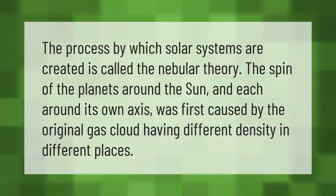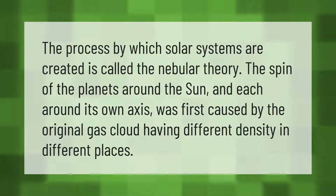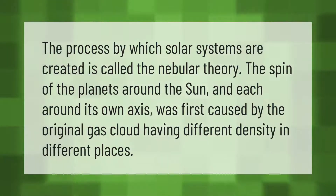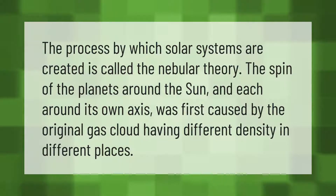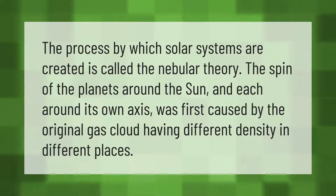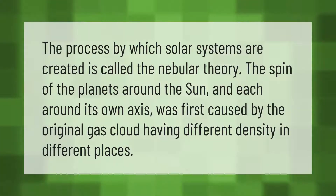The process by which solar systems are created is called the nebular theory. The spin of the planets around the sun and each around its own axis was first caused by the original gas cloud having different density in different places.